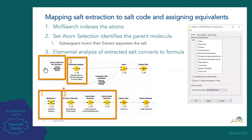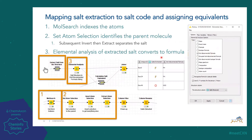Subsequent invert and then extract is the way we extract the salt from the structure. Finally, the elemental analysis of the extracted salt converts it to a formula — here we have elected to select the dot-disconnected formula. Here's what it looks like: the structure is extracted from the original structure and then converted into a string, which we then map and rename to match our salt identifiers in our system.